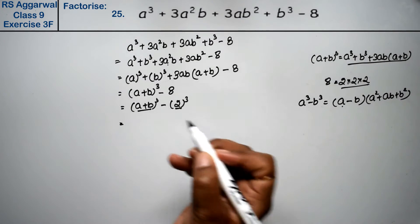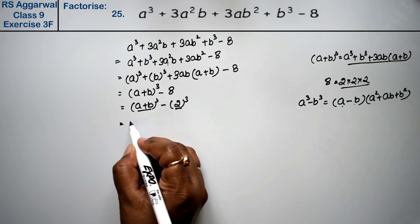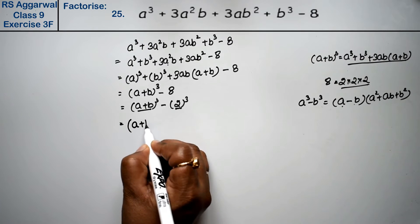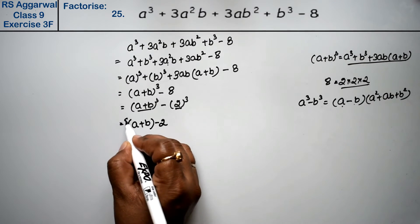Now in place of a we'll write a plus b, and in place of b we'll write 2. So we have: a plus b as it is, minus b which is 2 in one bracket.